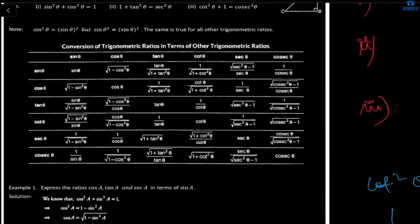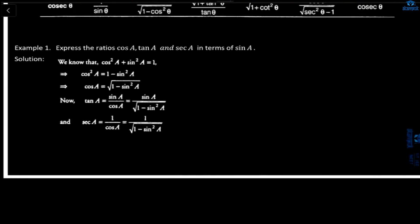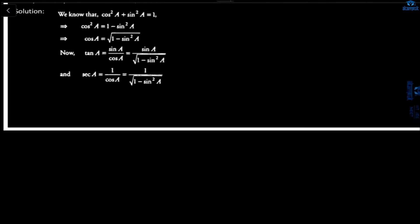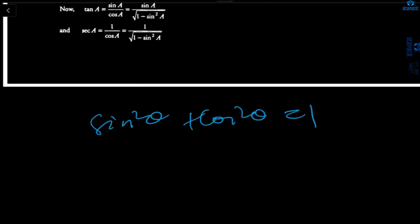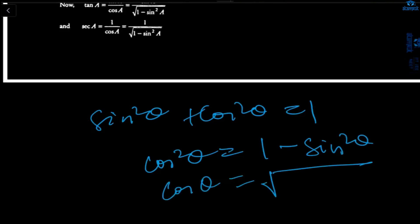Question: Express the ratios cosA, tanA, and secA in terms of sinA. From the identity sin²θ + cos²θ = 1, we get cos²A = 1 - sin²A, so cosA = √(1 - sin²A). For tanA: tan equals sine/cos, so tanA equals sinA divided by √(1 - sin²A). For secA: sec is 1/cos, so secA equals 1/√(1 - sin²A).